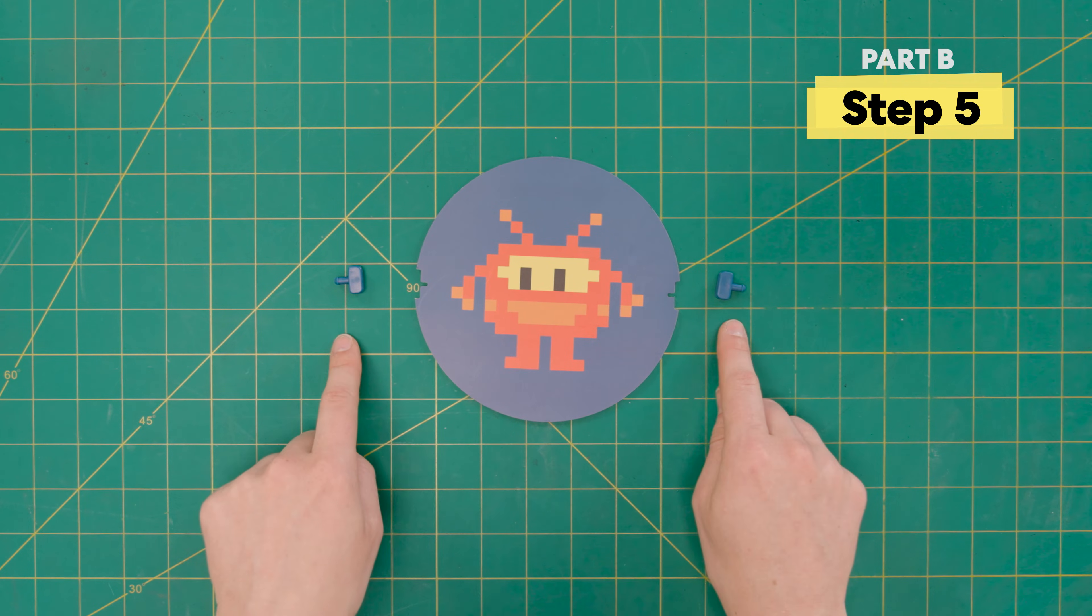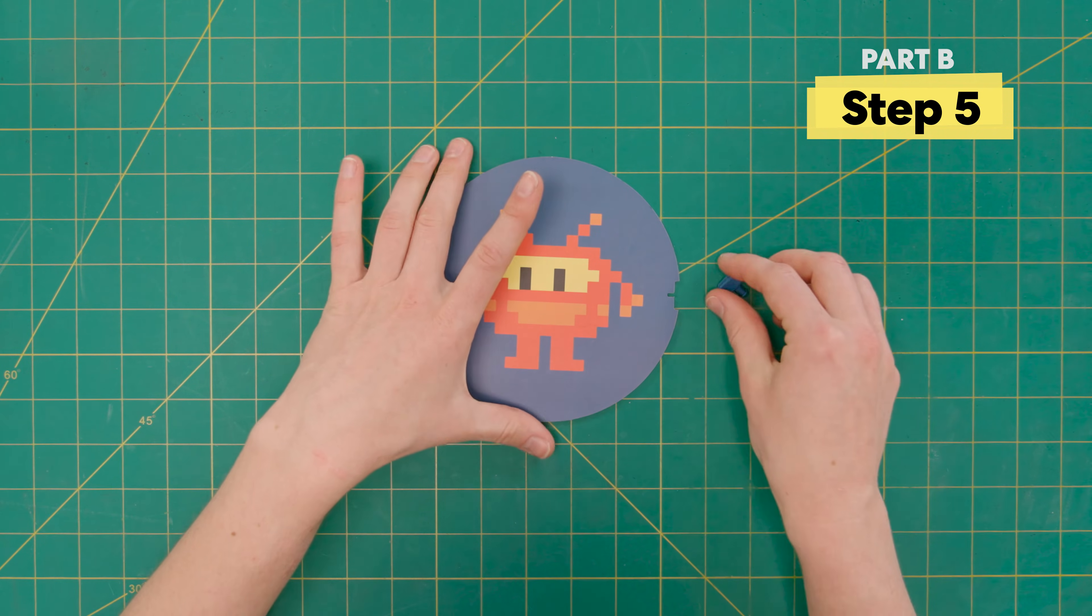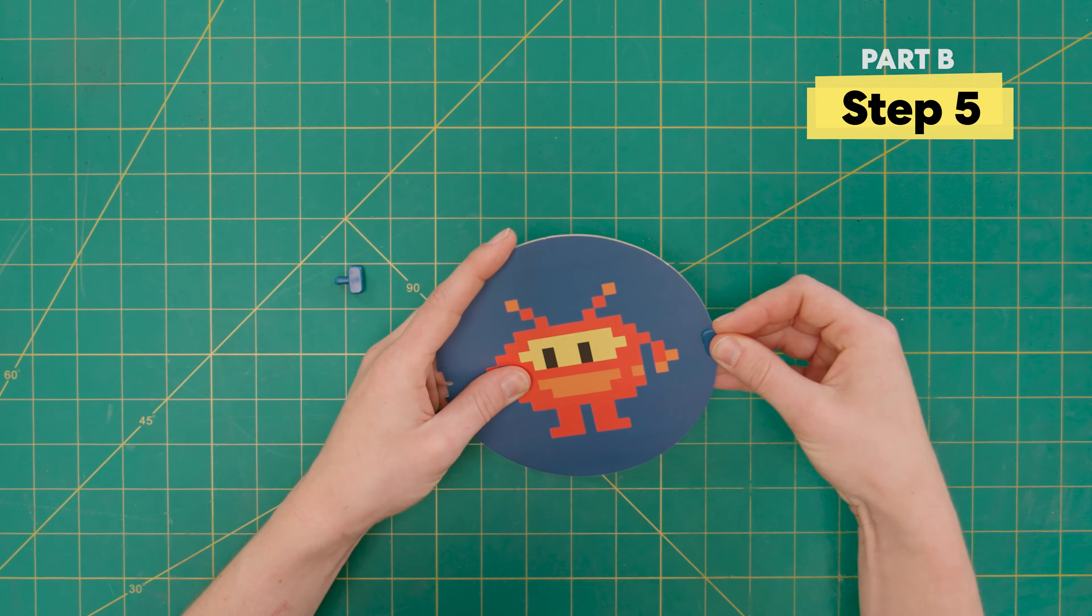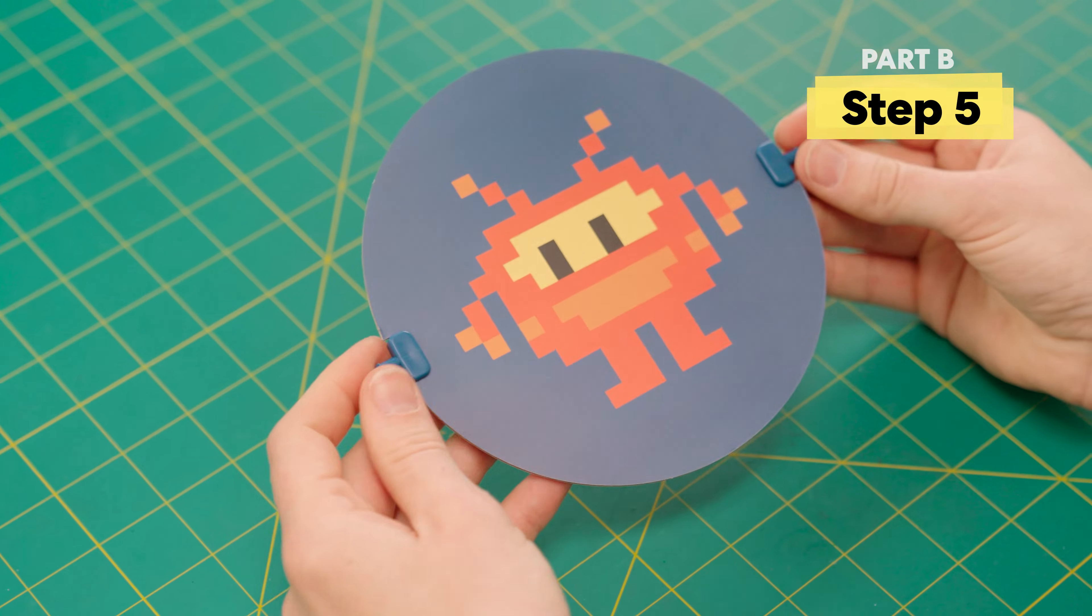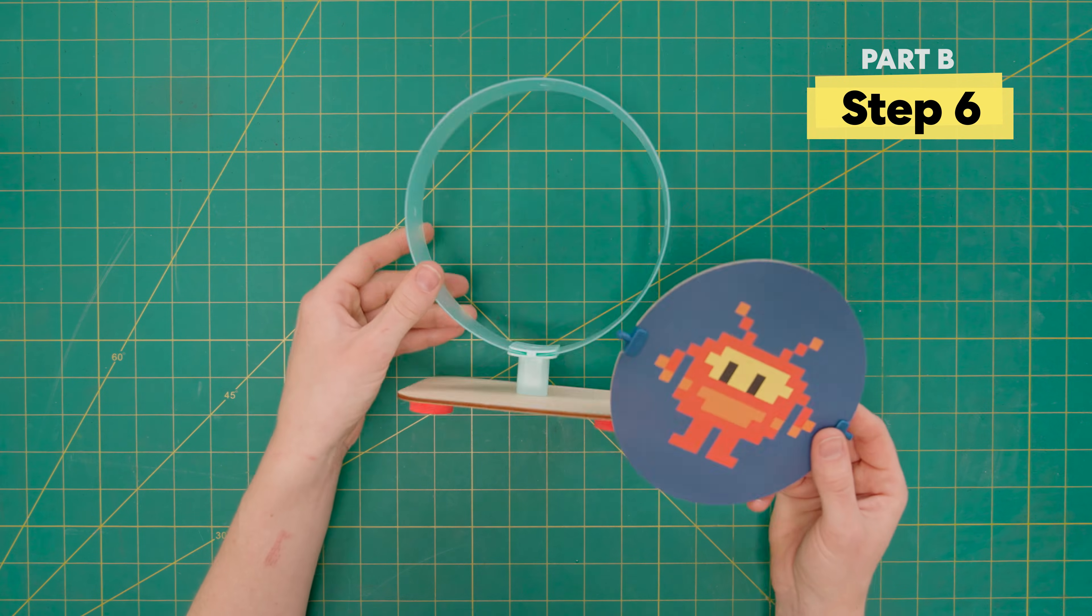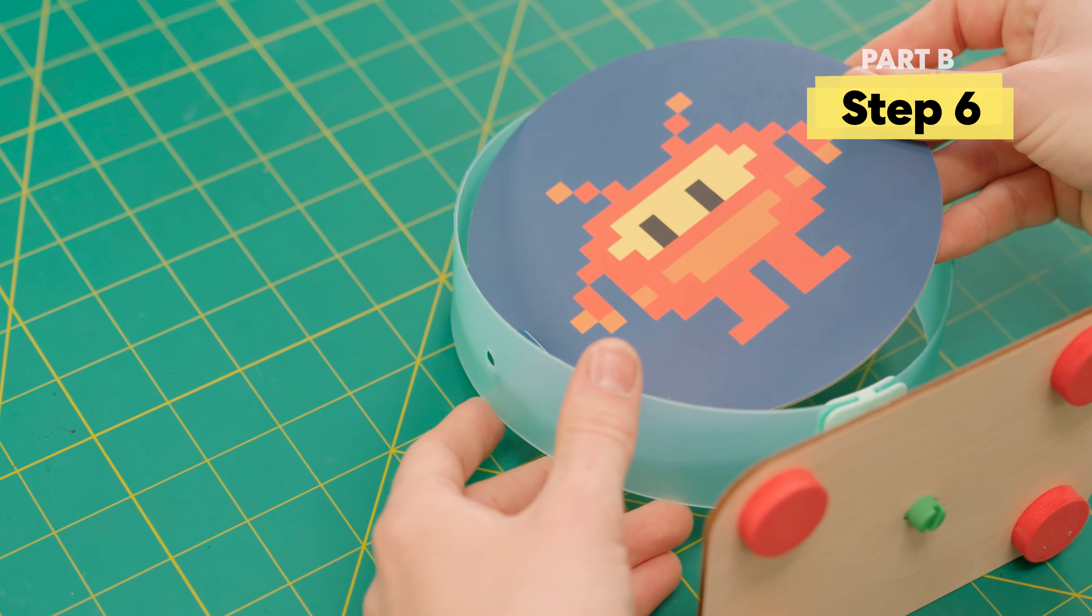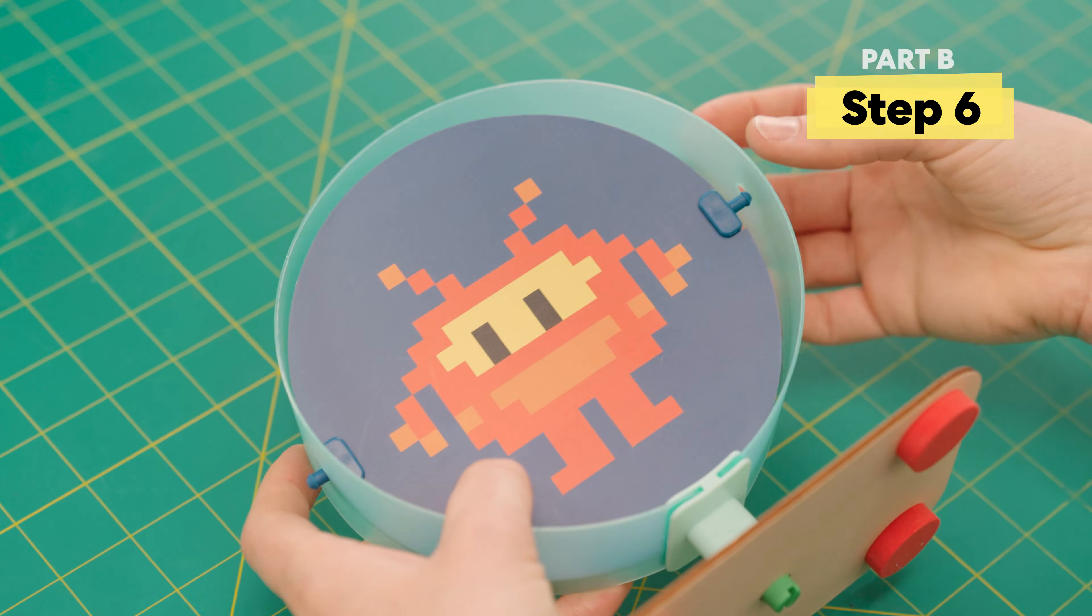Next, grab a target and two target clips and attach them together. Perfect. Then, to install them into the frame, push in one side and then the other.